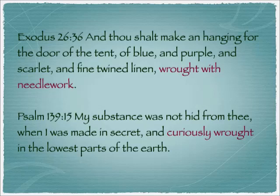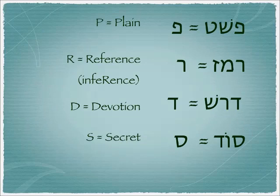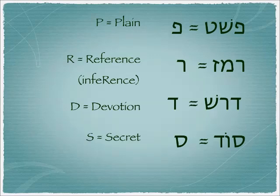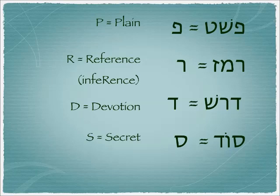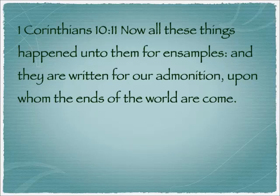We see this word again in Psalm 139:15: 'My substance was not hid from me when I was made in secret and curiously wrought' — embroidered in the lowest parts of the earth. There is a way that the human being is embroidered, made embroidered by Yehovah. So in a brief review, this is the Pardes. The Peh stands for Peshat, the plain meaning. The Resh stands for Remez — reference or inference. The Dalet stands for Drash, the searching-out devotional meaning for us. And the Samech, the Sod, is the secret meaning for the latter days. Paul tells us in 1 Corinthians 10:11: 'Now all these things happened unto them for examples, and they are written for our admonition upon whom the ends of the world are come.'